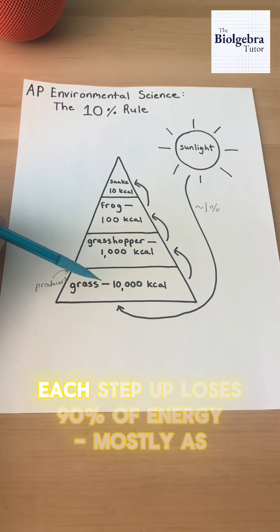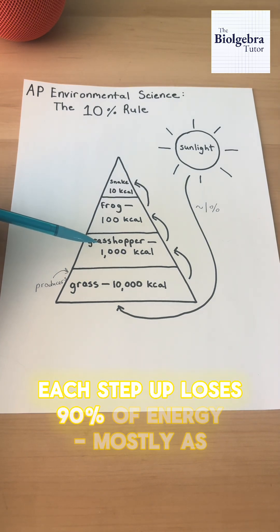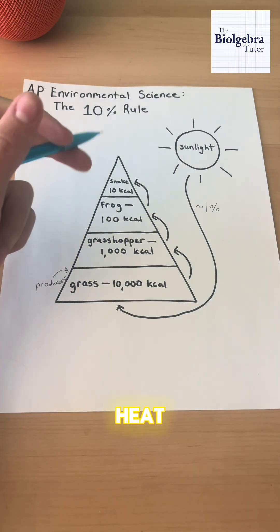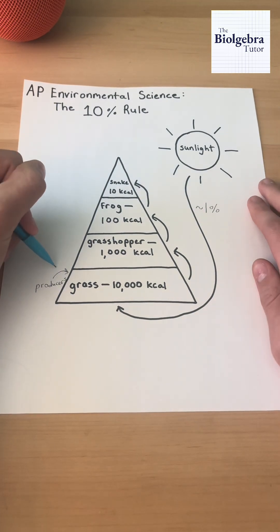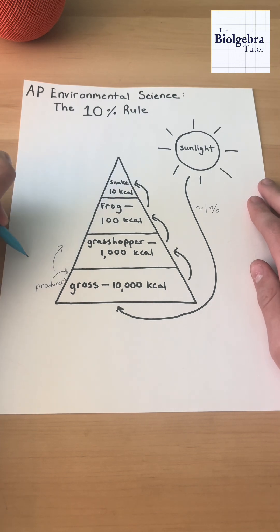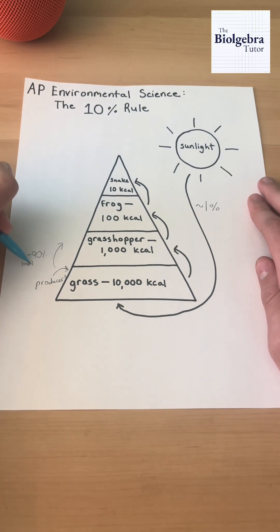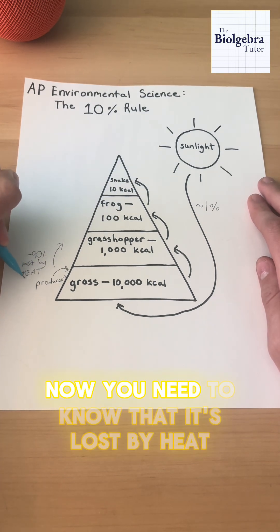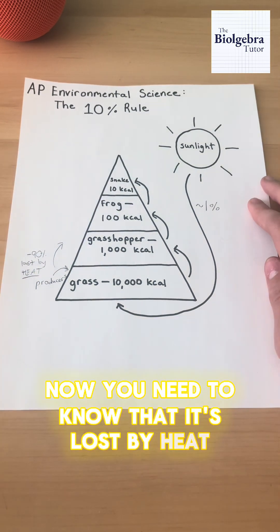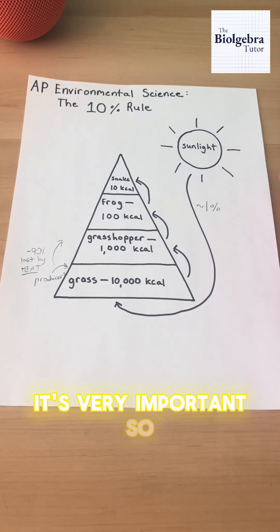Each step up the pyramid loses 90% of energy, mostly as heat. You need to know that the energy is lost as heat — that's very important.